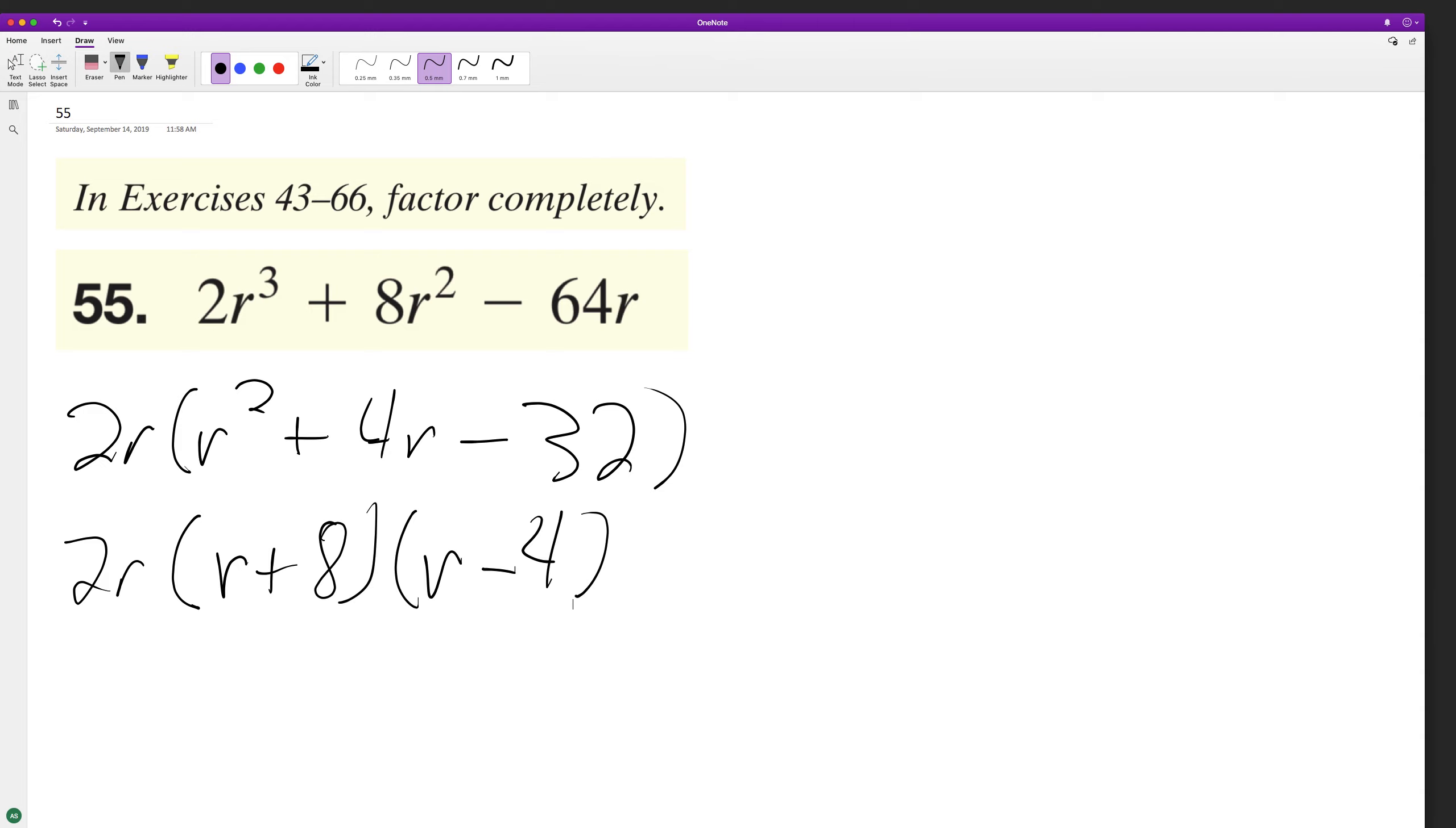So I'm pretty sure this is a correct factorization, but let's test it out. 2r, and then we'll have r² - 4r + 8r - 32.